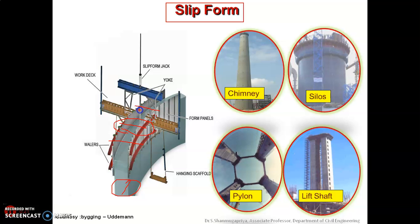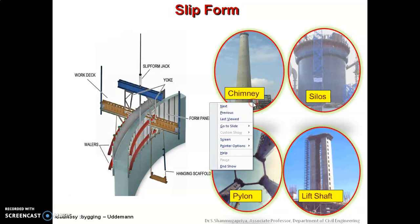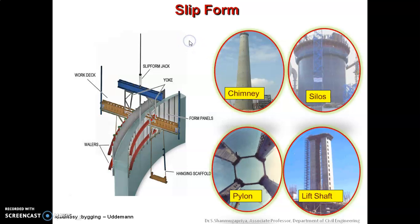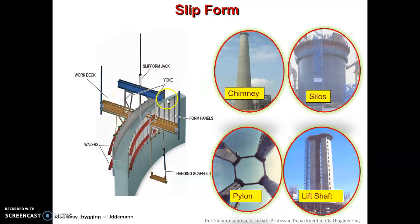In the early days of slip forming, wooden forms combined with wooden screw jacks and wooden yokes were used. Nowadays, these wooden forms are replaced by metallic forms with metallic yokes, as seen in the picture, and hydraulic jacks are used.